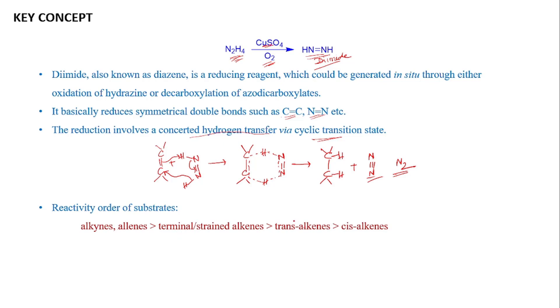Let's see a few examples. When this bridged bicyclic alkene is treated with potassium azodicarboxylate in presence of acetic acid in DCM, it will generate the diamide reagent. This diamide now can reduce this alkene. We will get this saturated product.